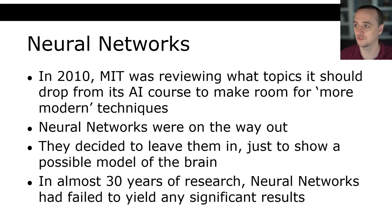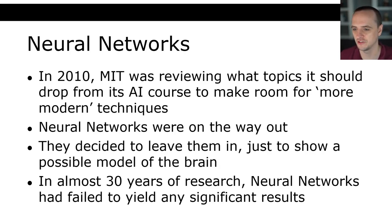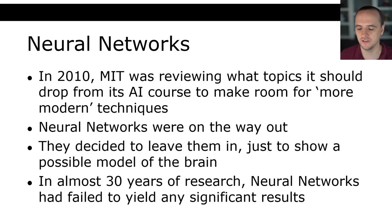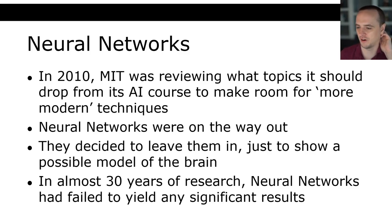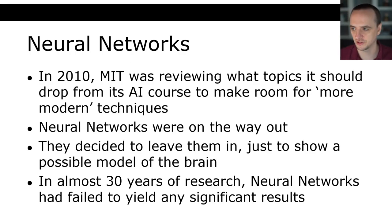They decided to keep neural networks in just because they showed an analogy to how the brain might be working — not because they were doing anything spectacular, but because they were a historical footnote in AI. In almost 30 years of research prior to this, neural networks had really failed to give any real significant results. And of course, look at how things have changed now — if you look up almost anything about artificial intelligence, you're going to get neural networks. People nowadays think that artificial intelligence is only neural networks, that's how popular and successful they've become just in the last decade.